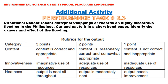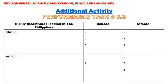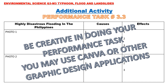Here is the sample format for the additional activity: three columns — first column for the photo of highly disastrous flooding in the Philippines with the date and place properly identified; second column for the causes of the flooding; third column for the effects. Photos may be researched using Google. Make sure to properly label the photo with the date and place where the flooding occurred.